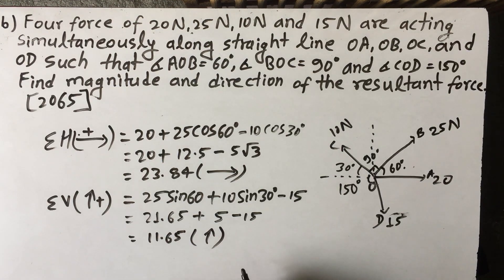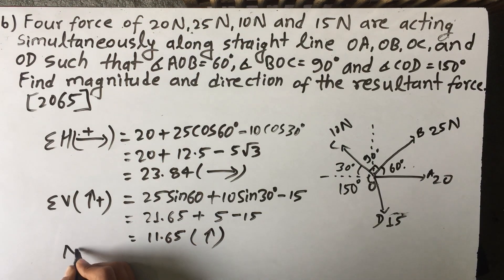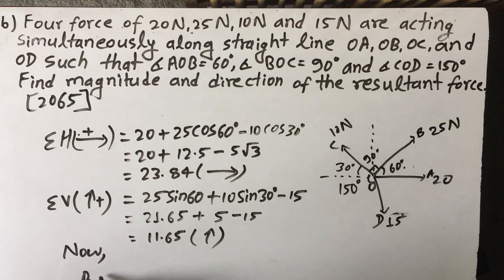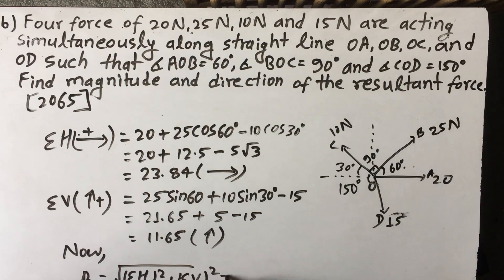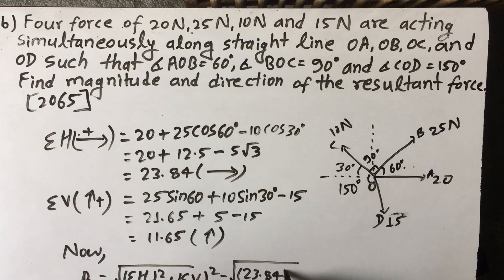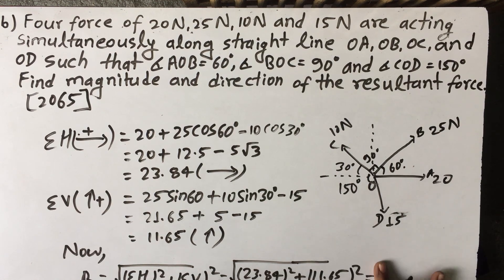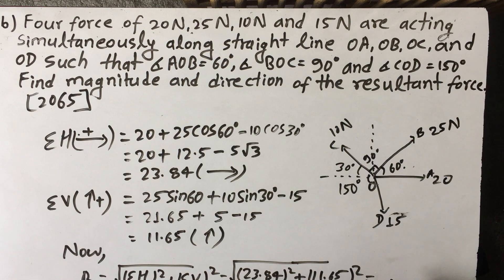Let's do the resultant. This is the resultant formula. Summation horizontal is one value and summation vertical is one value, and the resultant is the square root of their squares. The original resultant is square root of 8.4 squared plus 11.65 squared. This will be 100.1, which will be 26.53 Newton.